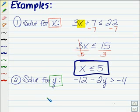Let's start to solve this inequality by adding 12 to both sides of our inequality. When we do that, we're going to be left with negative 2y is greater than 8.